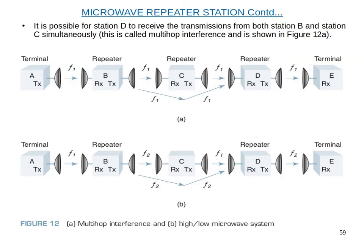To avoid the multi-hop interference problem, we can divide the total available band into two half-sides — one low frequency band and one high frequency band.